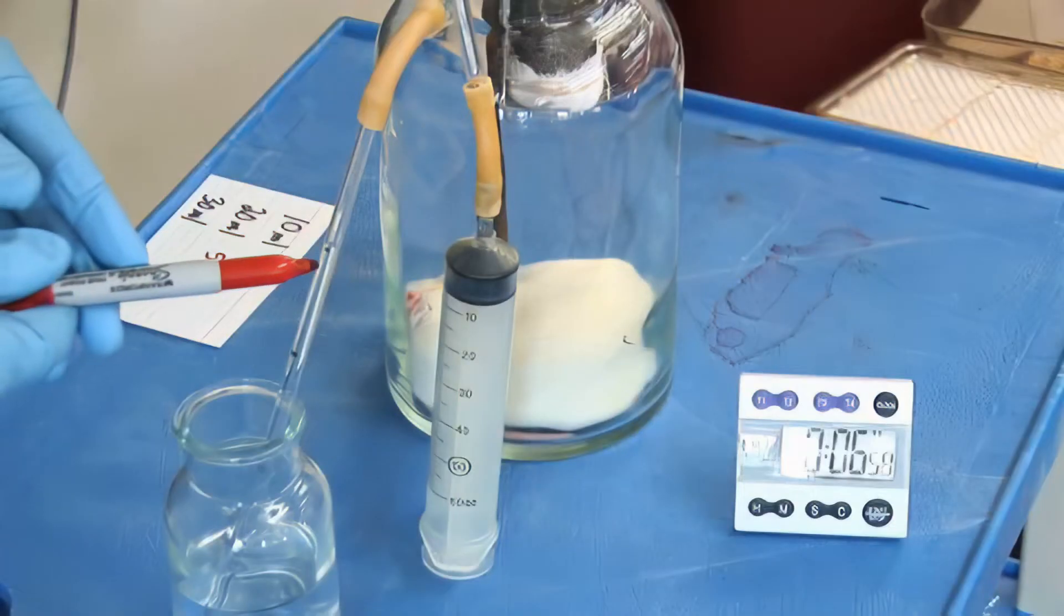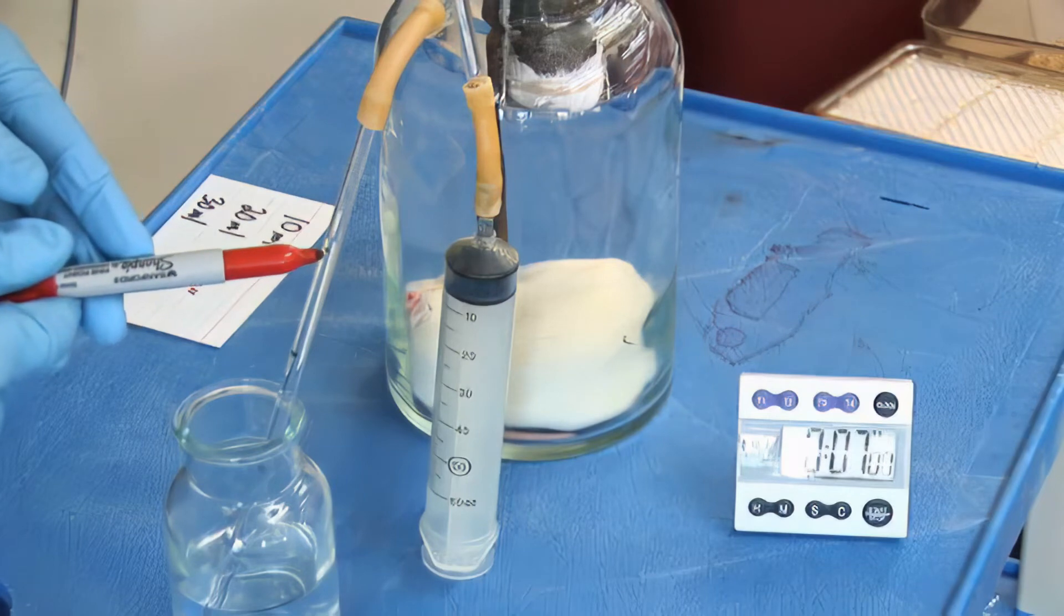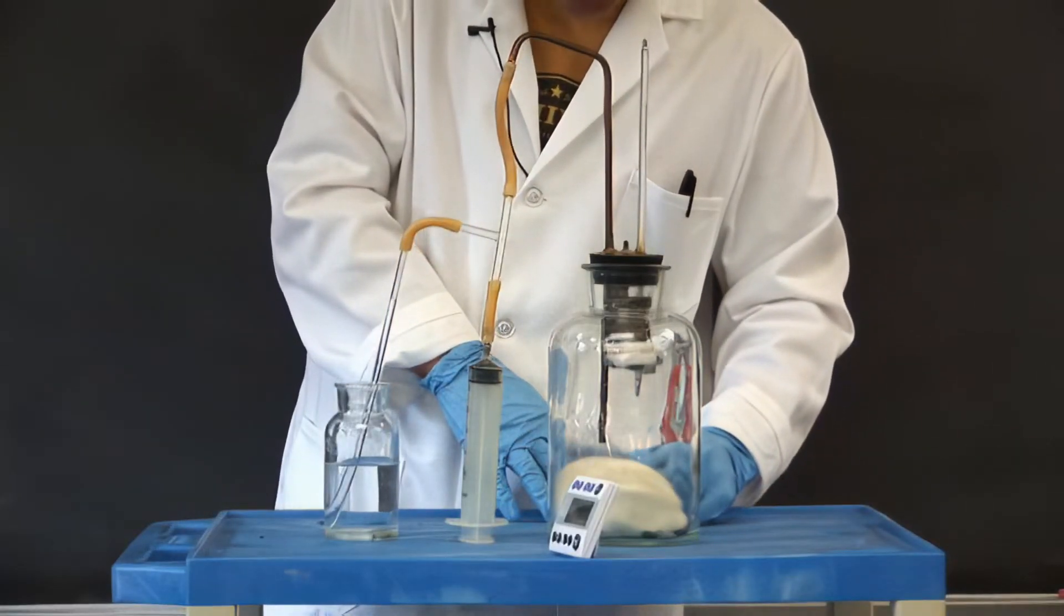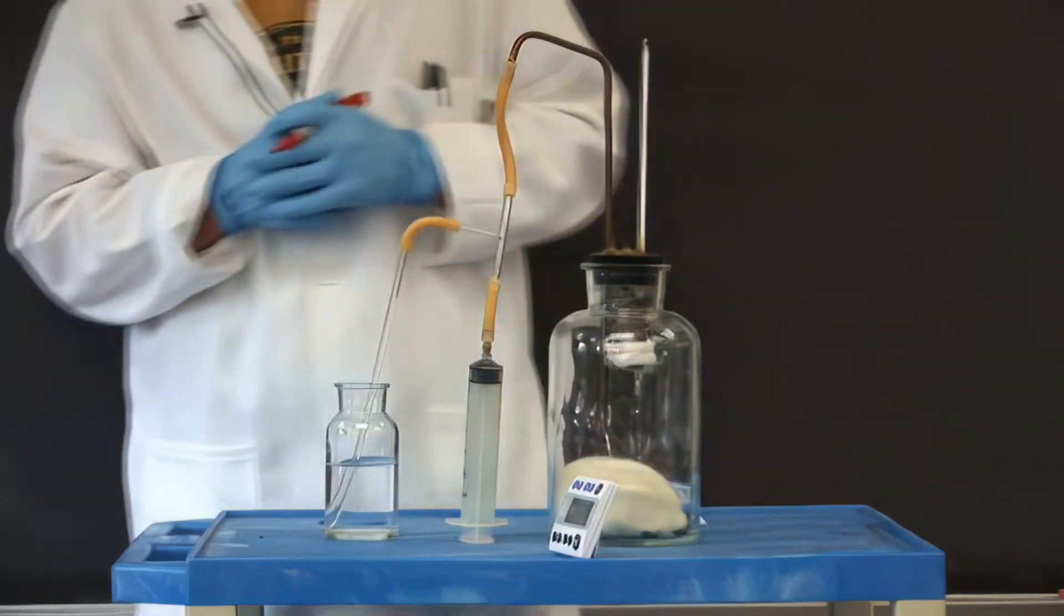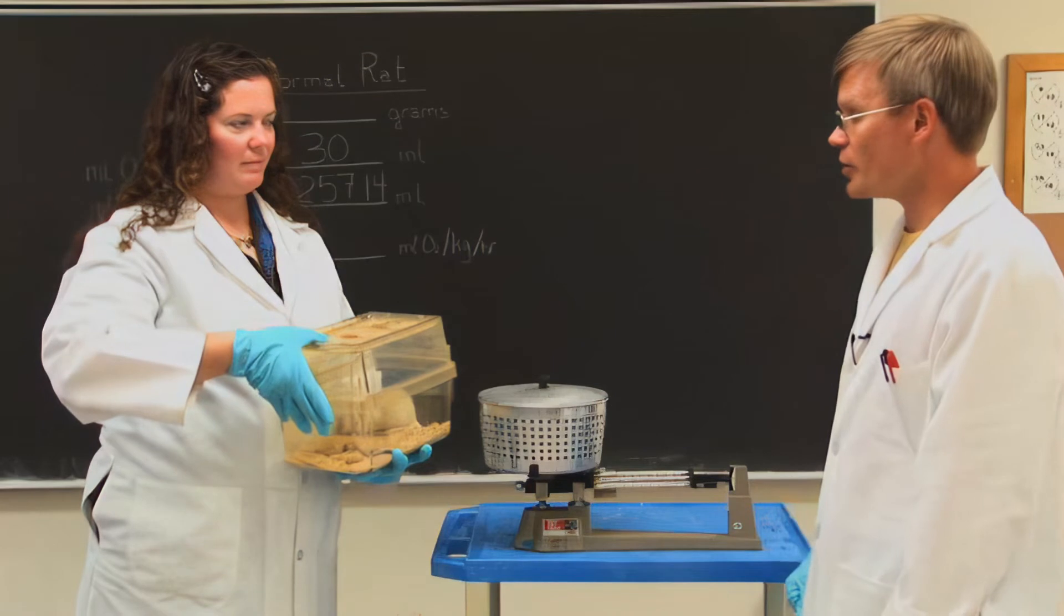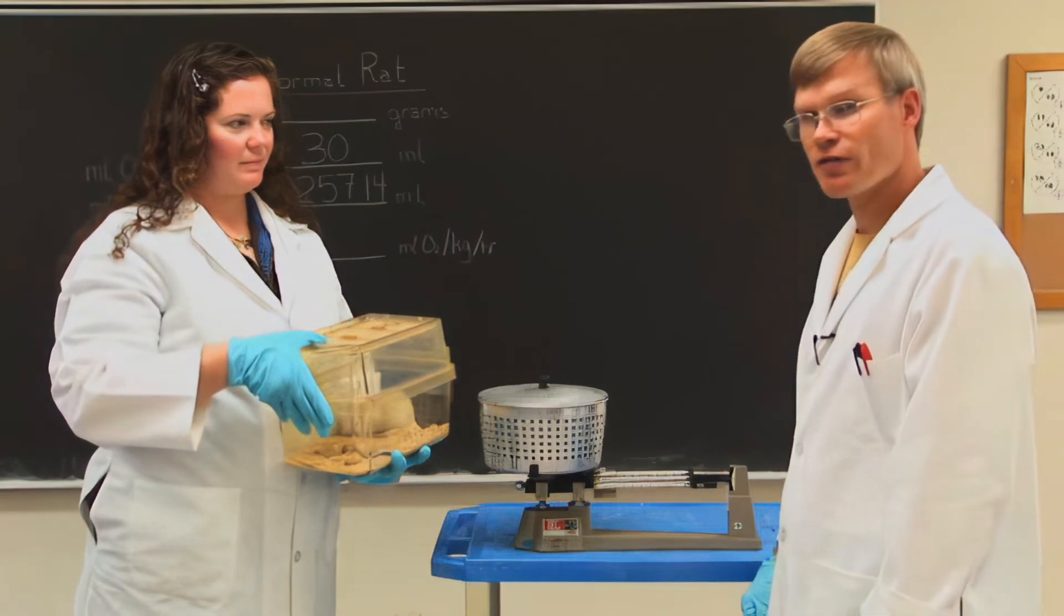We're coming up on our 30 mil point right there. We've just passed it, 7 minutes. At the 7 minute mark, this rat consumed 30 mils of oxygen. We have determined that 30 mils of oxygen were consumed in 7 minutes.